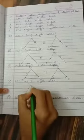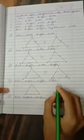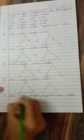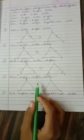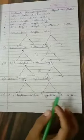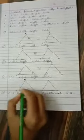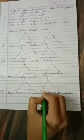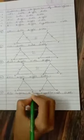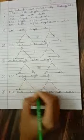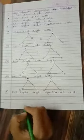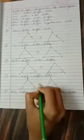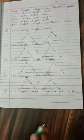AAS is Angle-Angle-Side. For triangles ABC and PQR, if angle B equals angle Q, angle A equals angle P, and side AC equals side PR, then it is an Angle-Angle-Side congruent triangle. The corresponding parts must be equal.